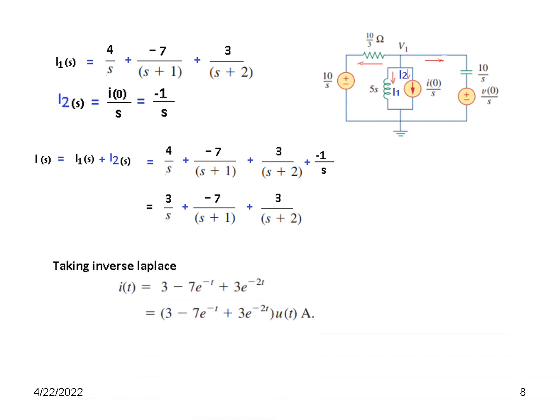So taking inverse Laplace, this will be 3 - 7e^(-t) + 3e^(-2t). And in neat form with the unit step function. So I hope you have been able to follow this. If you have any difficulty, let me know so I can correct it. Thank you.